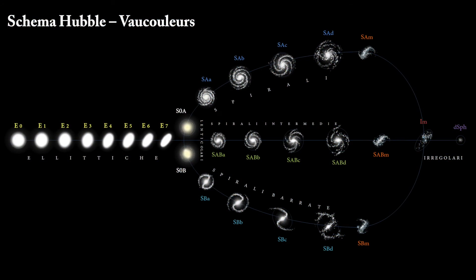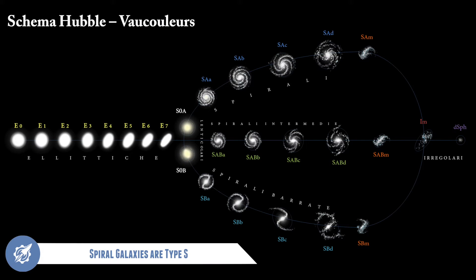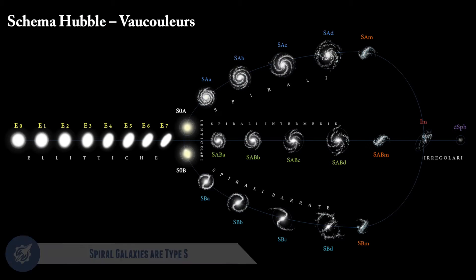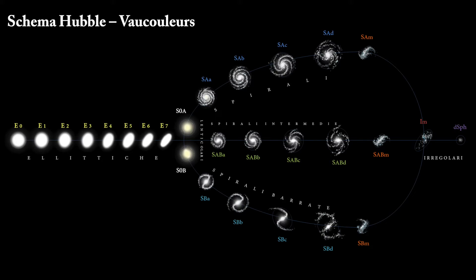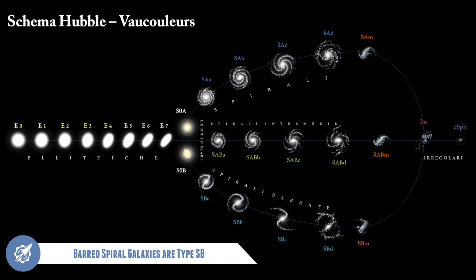The Hubble classification scheme lists spiral galaxies as type S, with an A, B, or C depending on how tight the spiral arms are relative to the size of the central bulge, and barred spiral galaxies have the symbol SB.